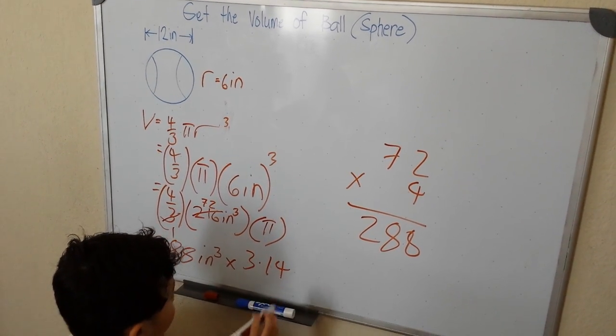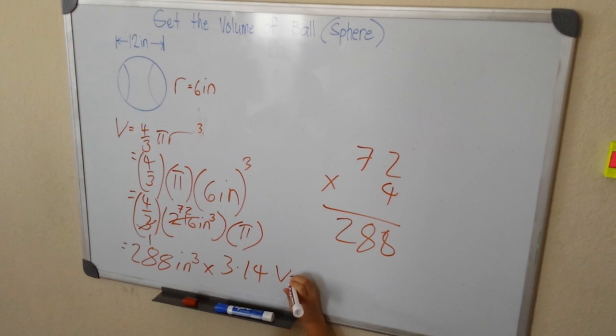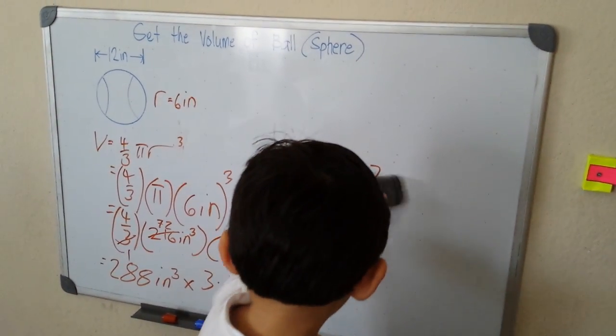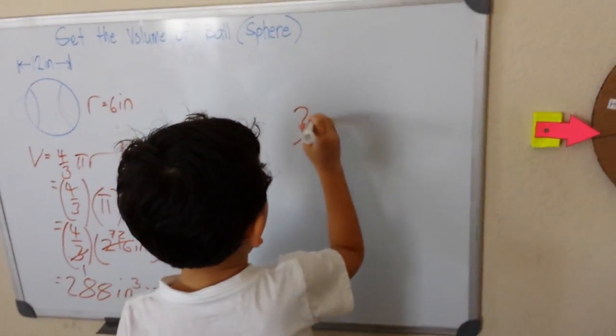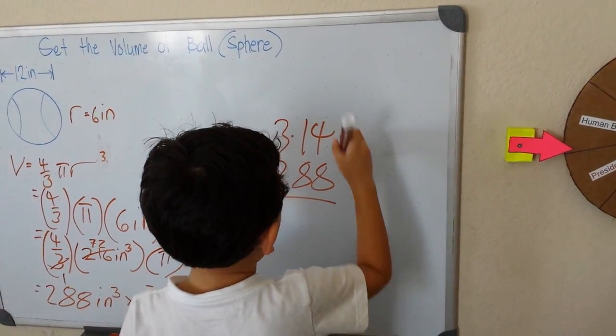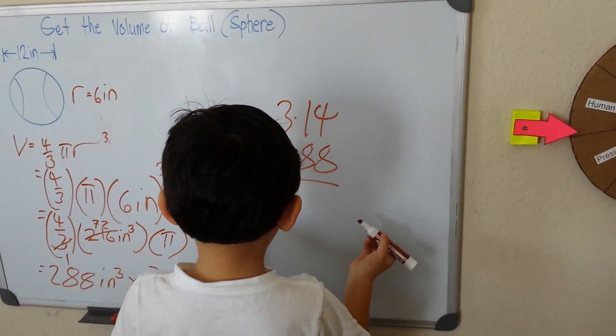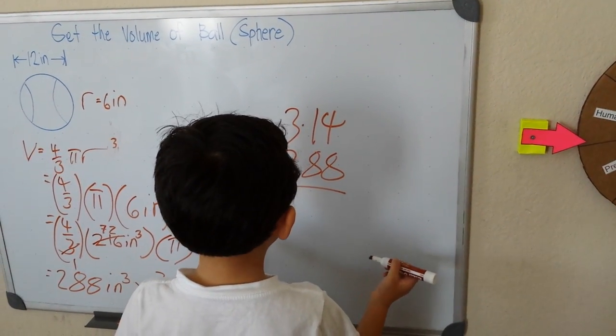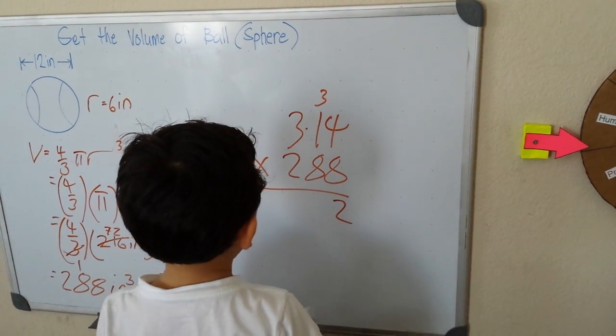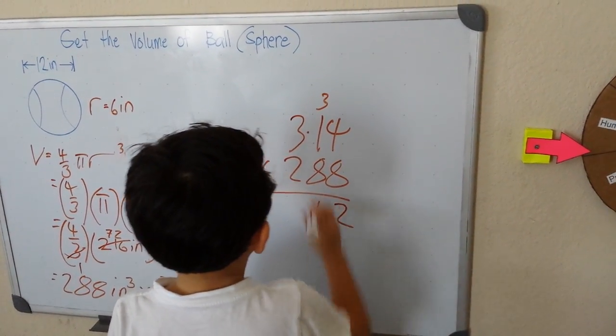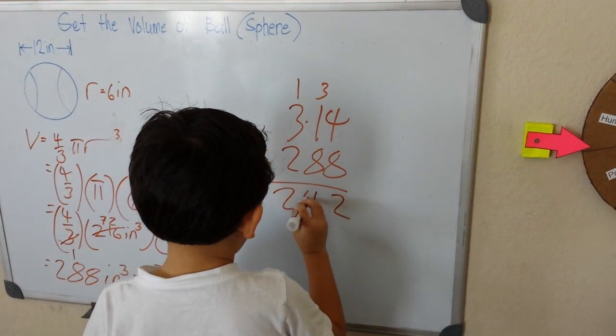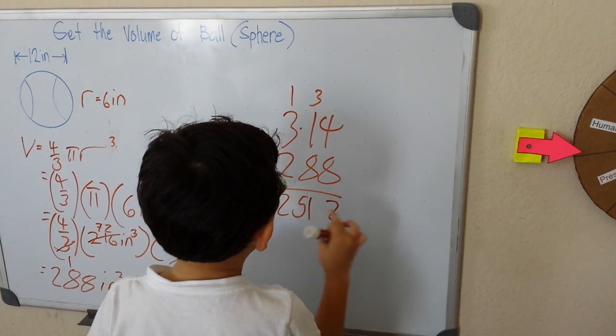Then times pi, which is 3.14. So we multiply 3.14 times 288. This is a big one. 8 times 4 is 32, carry the 3. 8 times 1 is 8 plus 3 is 11, carry the 1. 8 times 3 is 24 plus 1 is 25. Now we need to move the numbers a little bit more.